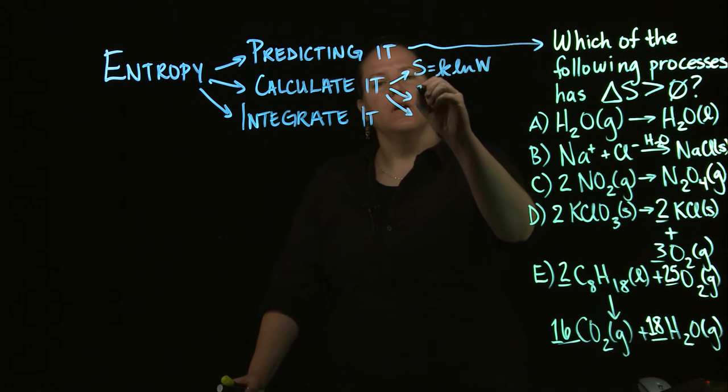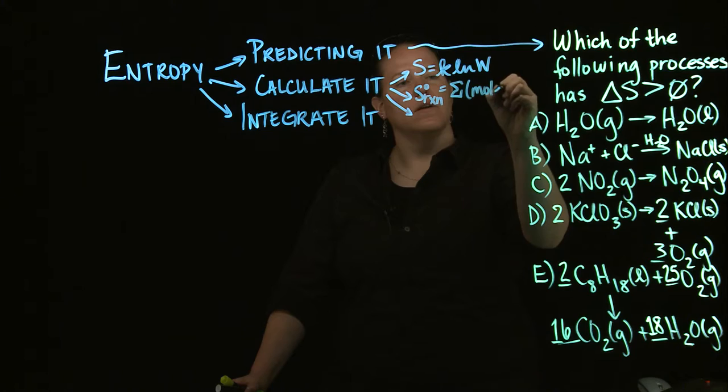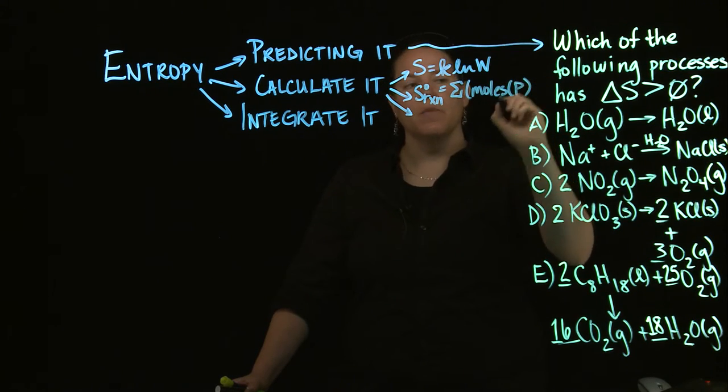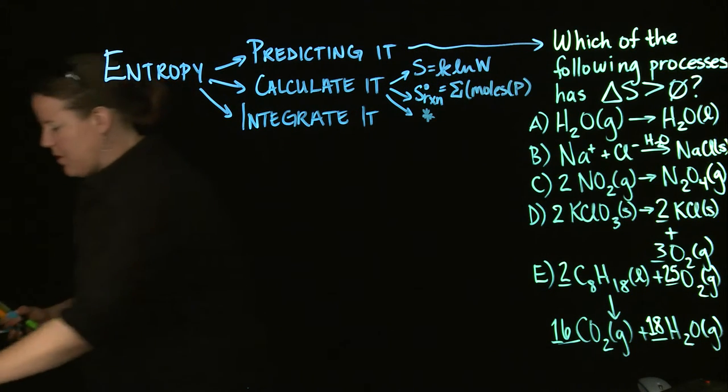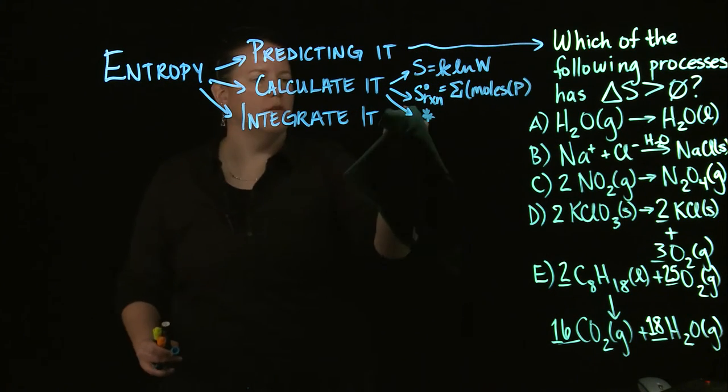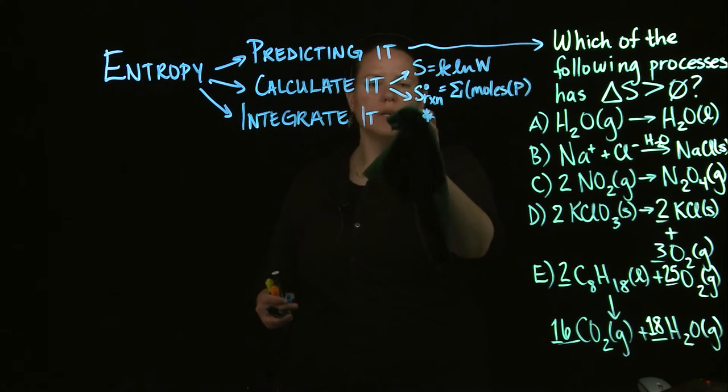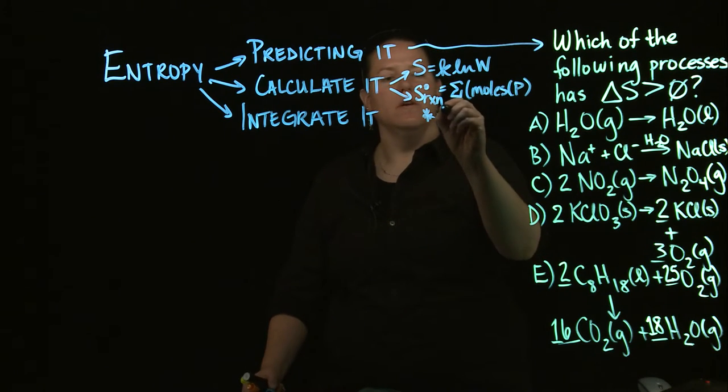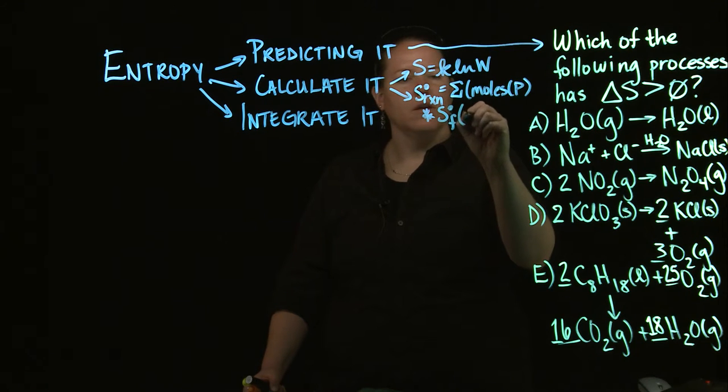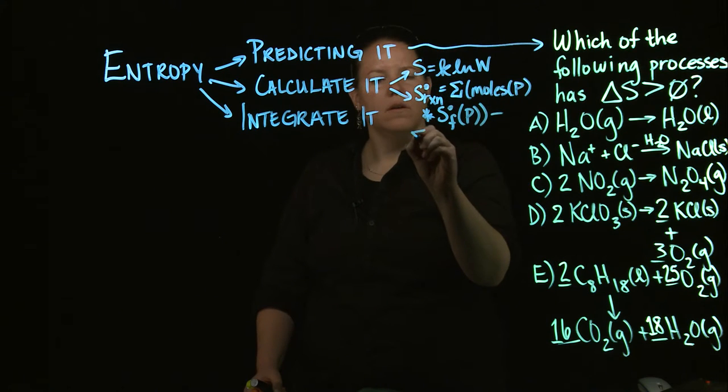You could also do the S of a reaction at standard conditions by doing much the same thing that you did for enthalpy in general chemistry. This was the process of doing standard molar enthalpies of formation in Gen Chem 1. Here we're talking about standard molar entropies. Sometimes they're labeled as formation constants, usually they're not.